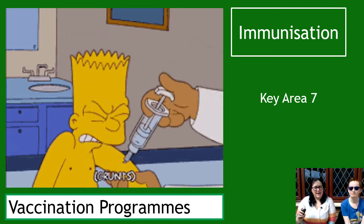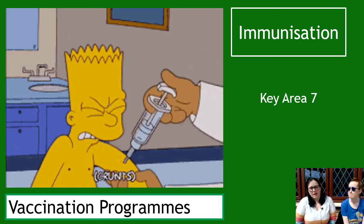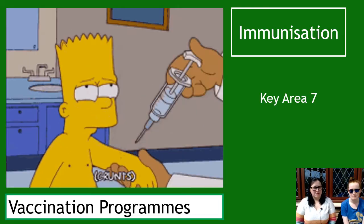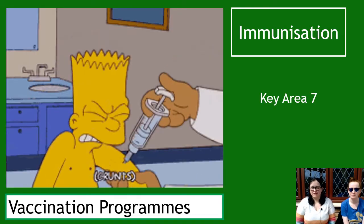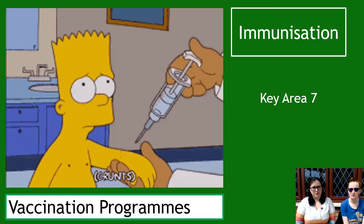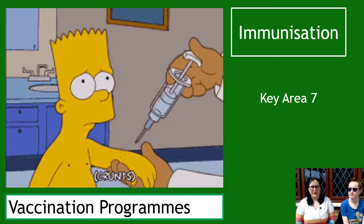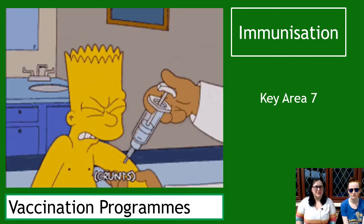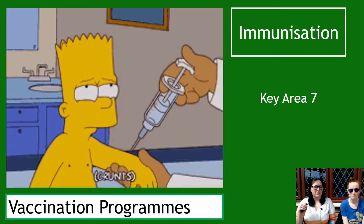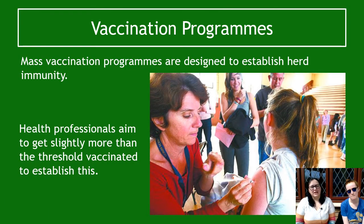We're in key area seven of unit three, neurobiology and immunology. After this there's just a very short clinical trials video and then we're done with the whole of higher human biology. So let's get into what we're looking at in this one: vaccination programs.